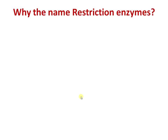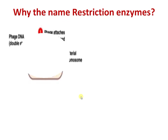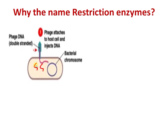First of all, why the name restriction enzyme? Assume this is a bacterium. The major threat for a bacterium is a bacteriophage — a virus that attacks the bacterium. Once the virus attaches to the surface of the bacterium, it injects the viral genome, which replicates inside the bacterium, ultimately gets encapsulated within the capsid, and causes lysis of the bacterial cell.